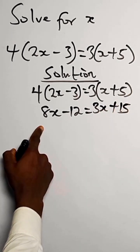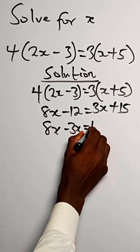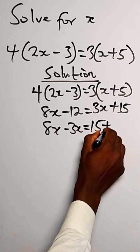So the next thing we collect the like terms. We have 8x minus 3x equals 15 plus 12.